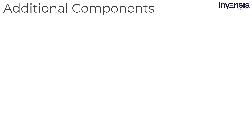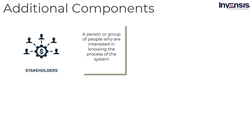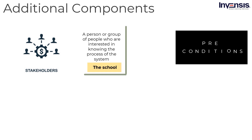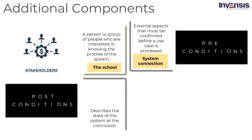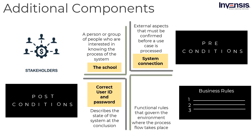Along with the essential components, some additional components must be included in a use case. Stakeholders may be a person or group of people interested in knowing the system's process — in our case, the school is a stakeholder. Preconditions are external aspects that must be confirmed before a use case is processed; in our example, a proper system connection becomes the precondition. Postconditions describe the state of the system at the conclusion; in this case, mailing the student after entering the right user ID and password becomes the postcondition. Business rules are the functional rules that govern the environment where the process flow takes place; in our example, students must log in only between 9 a.m. and 2 p.m. becomes the business rule.